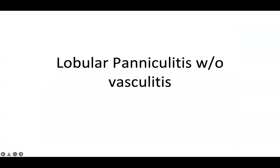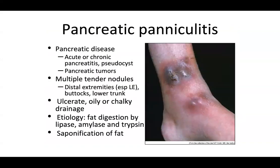Moving on to lobular paniculitis without vasculitis — pancreatic paniculitis is one of the most interesting to look at on histology. As the name implies, it's due to pancreatic disease, whether acute or chronic pancreatitis with pseudocysts, pancreatic tumors, etc. Anything that causes leakage of pancreatic enzymes into the bloodstream can ultimately lead to saponification of the fat.